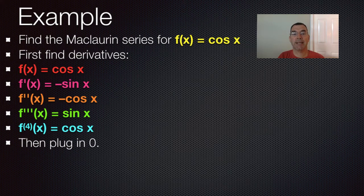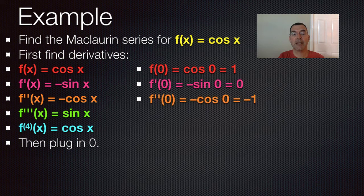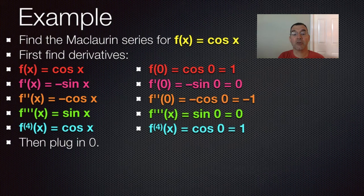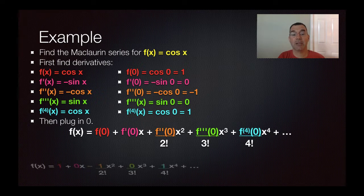Now we plug in zero, because we're evaluating all of the derivatives at x equals zero. The function itself is worth one, the first derivative is worth zero, the second derivative is worth negative one, the third derivative is worth zero again, and the fourth derivative is worth one. There's the generic expansion of the Maclaurin series, and I'm going to replace all the f's and derivatives with the numbers I found.